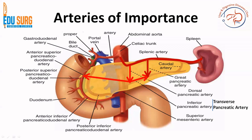The left transverse branch joins the great pancreatic artery, also called the arteria pancreatica magna — a branch of the splenic artery. Together, the great pancreatic artery and the inferior or transverse pancreatic artery continue toward the tail of the pancreas, where they join the caudal artery of the pancreas, again a branch of the splenic artery. So remember: three parallel downward branches arise from the splenic artery — the dorsal pancreatic artery near the neck, the great pancreatic artery, and the caudal artery toward the tail — all providing blood supply to the body and tail of the pancreas.